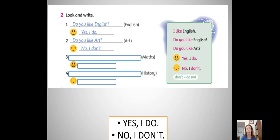Bien, a la derecha tienen la explicación. I like English. Do you like English? Do you like art? Yes, I do. No, I don't. Entonces, completamos las oraciones, las preguntas y las respuestas. Do you like English? Yes, I do. Porque tenemos la carita feliz. Do you like art? No, I don't. Porque tenemos la carita triste, que no le gusta.